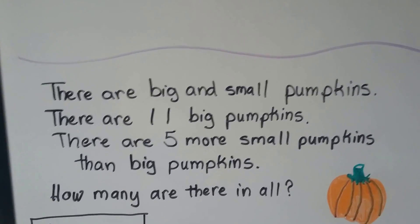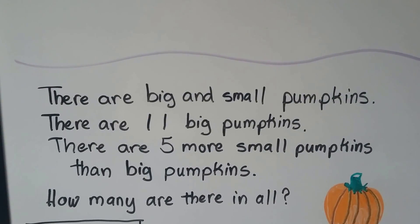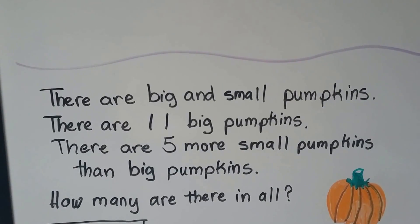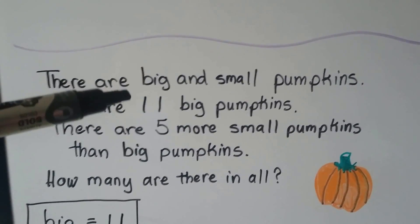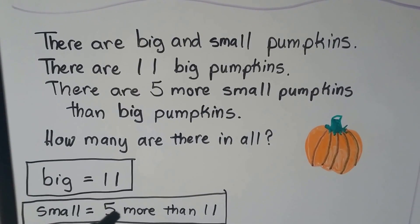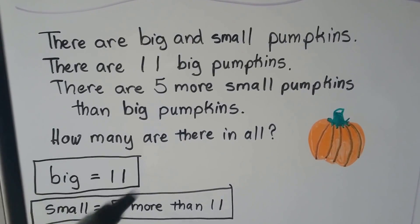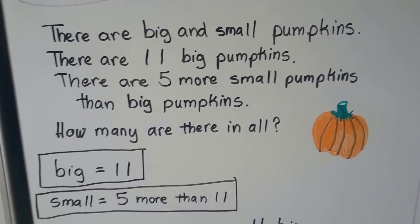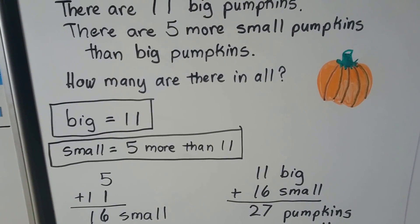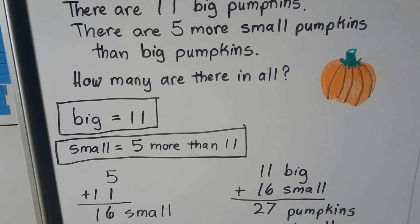There are big and small pumpkins. There are eleven big pumpkins. There are five more small pumpkins than big pumpkins. How many are there in all? We know there are eleven big pumpkins. How many small ones are there? There's five more than eleven. There's five more than the big ones. And the big ones have eleven, so it's five more than eleven. Five more than eleven is five plus eleven. We add the ones. Five plus one is equal to six. We bring this one ten down. It's sixteen small.